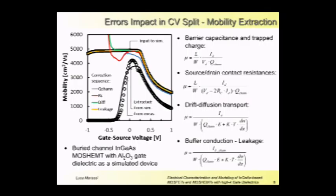In particular, in the operative range for a device from 0 to 1 volt, we systematically underestimate the mobility due to the presence of contact resistances and the presence of the barrier capacitance of the barrier layer.